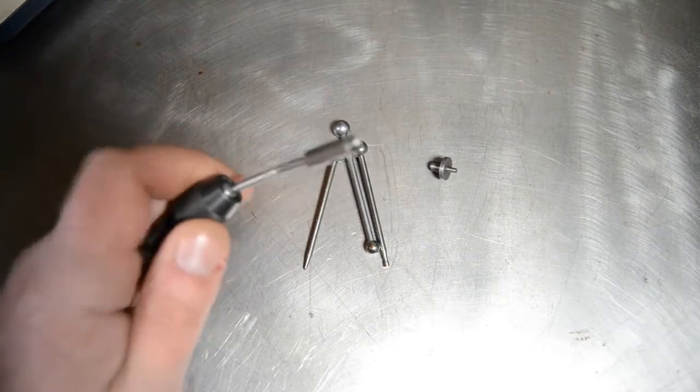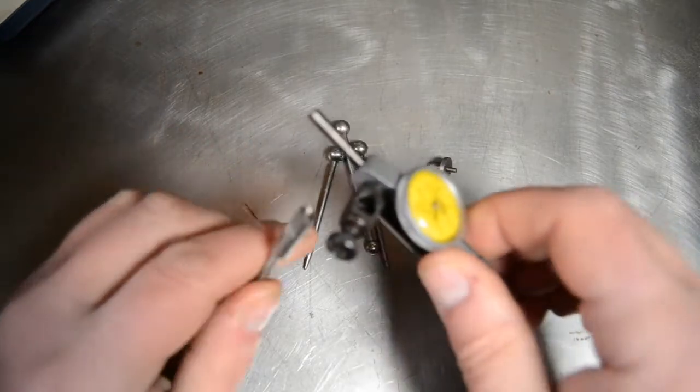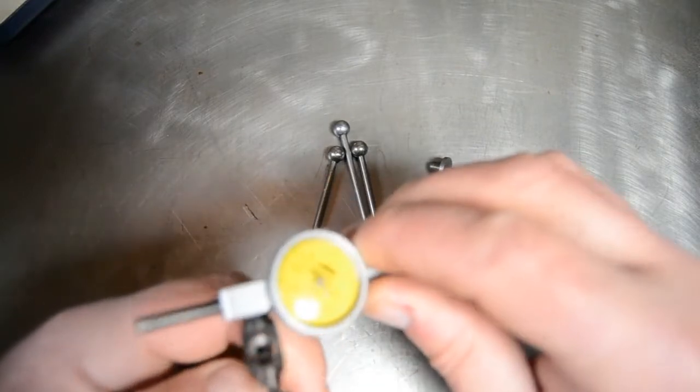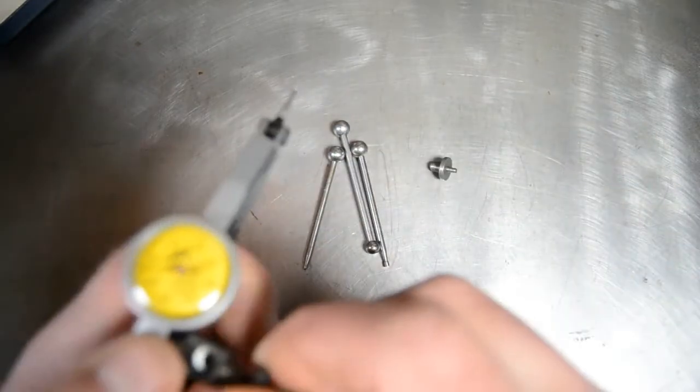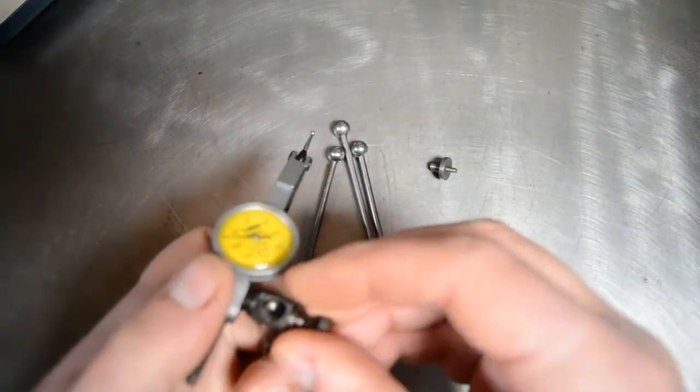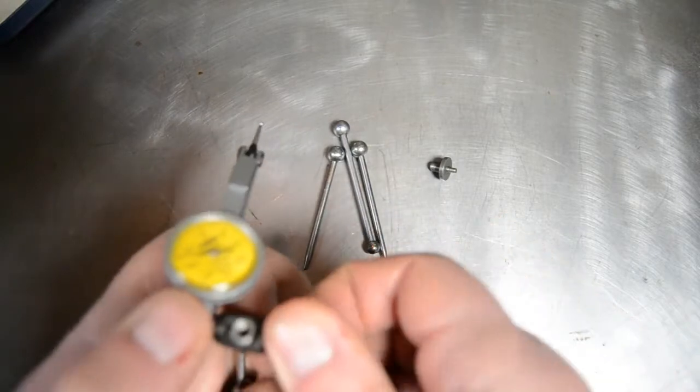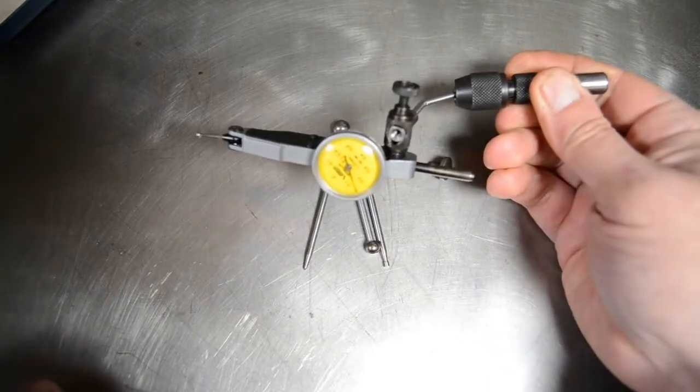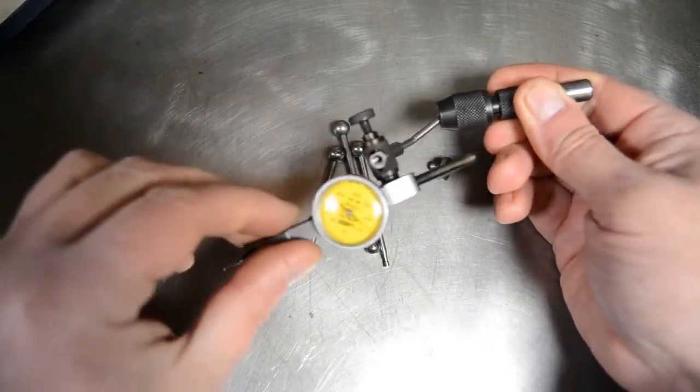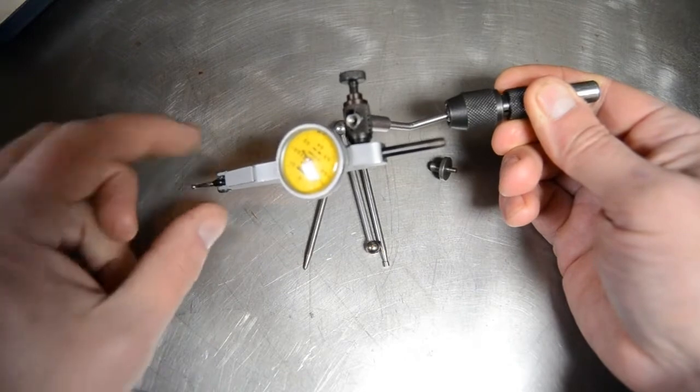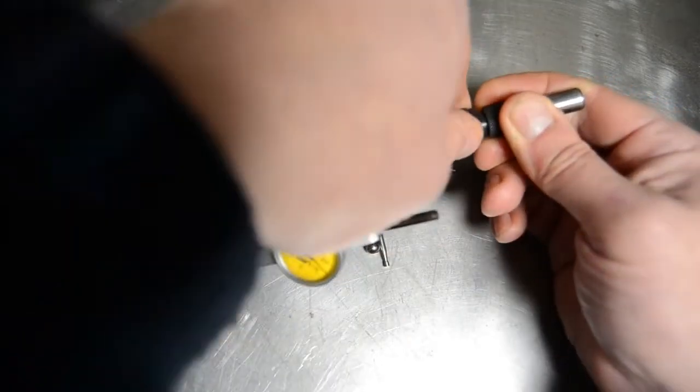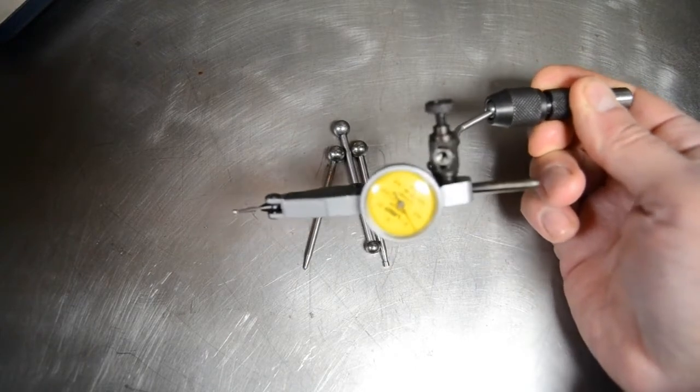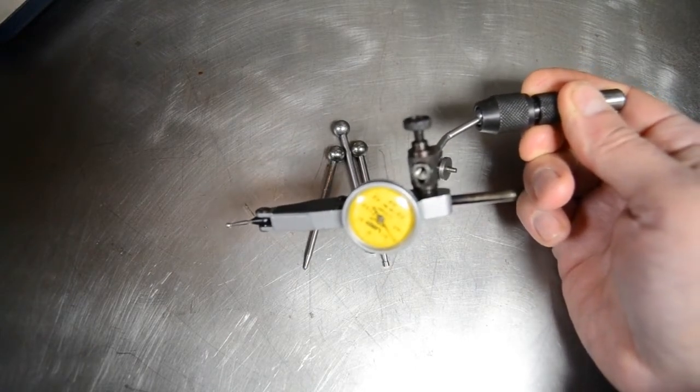This particular one is quite a useful one, it's a little gauge holding device so we can put our little verdict gauge into the holder. That will then give us a nice free range of motion which we can clamp up nice and tight and then use to take measurements on our vise setup, for example to make sure it's nice and square to the bed.